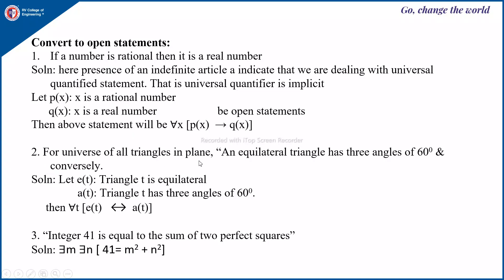Second example: 'For the universe of all triangles in a plane, an equilateral triangle has 3 angles of 60 degrees, and conversely.' Here 'conversely' means if and only if. Let E(t) represent 'triangle t is equilateral' and A(t) represent 'triangle t has 3 angles of 60 degrees.' Therefore: for all t, E(t) ↔ A(t). Third: '41 is equal to the sum of two perfect squares' becomes ∃m ∃n such that 41 = m² + n². We will stop here and continue in the next video.